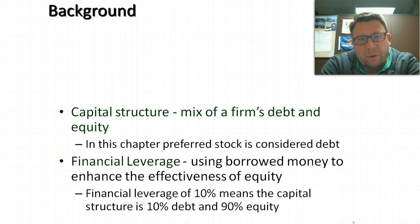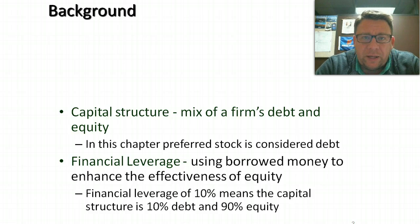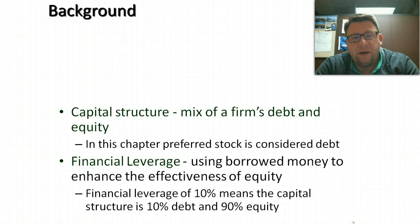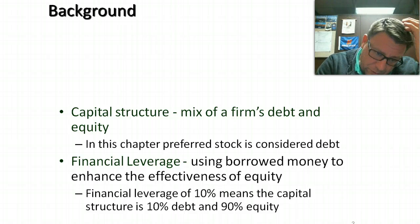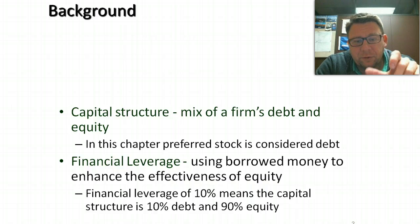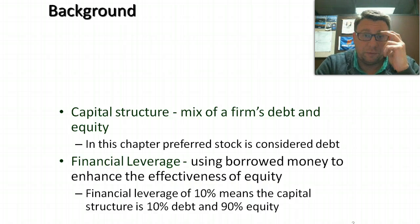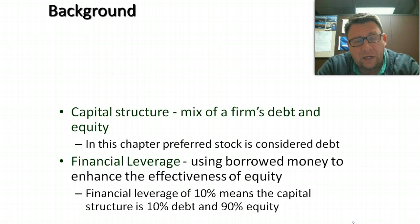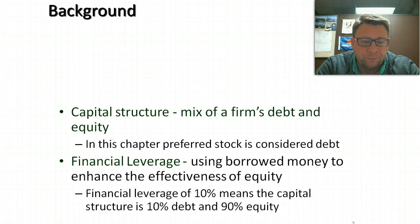As you recall from our previous week, the capital structure is the mix of the firm's debt and equity. In our previous podcast, we talked about the amount of long-term debt, preferred stock, and then common equity. In this chapter, as we're dealing with leverage, we're going to consider preferred stock as debt. Preferred stock is technically equity, and for accounting purposes we record it as equity, but for financial ratios and financial decision-making, preferred stock is lumped in with debt rather than common equity.